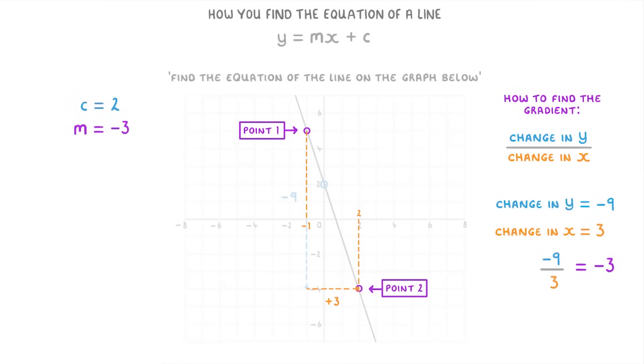And so to finish, we just take our equation y equals mx plus c and plug in the minus 3 as m and the 2 as c, which will give us y equals minus 3x plus 2 as the equation of our line.